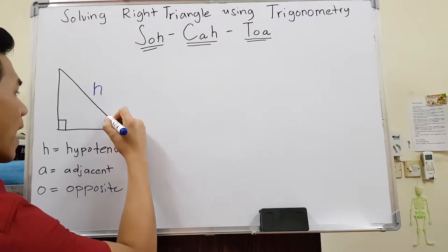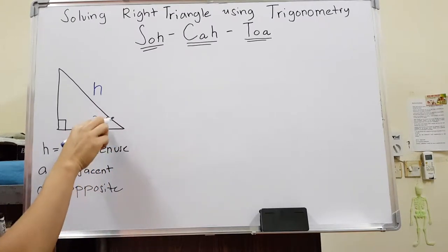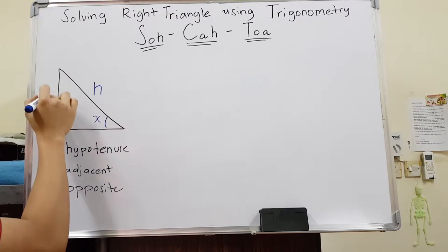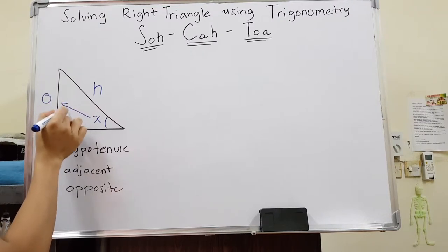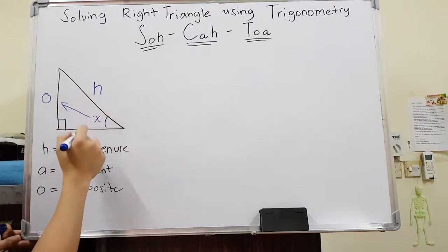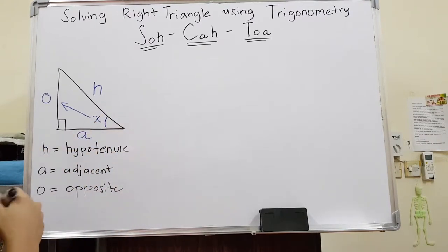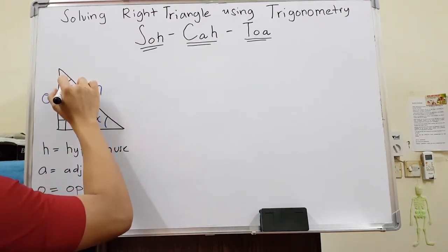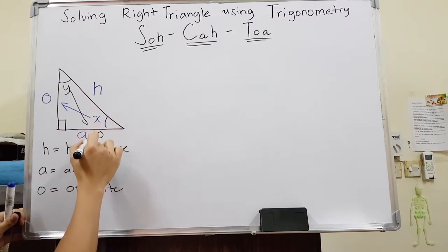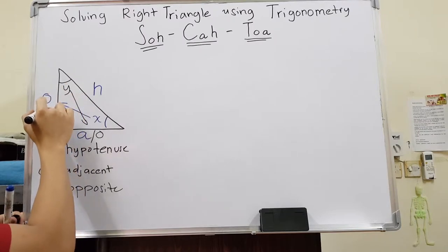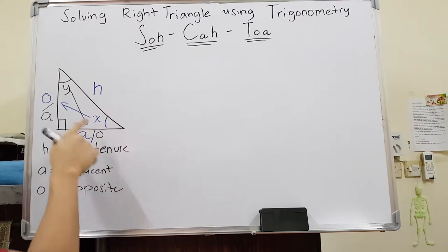Let's say angle X is here. The side opposite to angle X is the opposite side, and the remaining side is the adjacent — the side beside the angle. Now, if the angle is instead angle Y at a different vertex, then the opposite and adjacent sides switch accordingly. As you can see, the adjacent and opposite depend on where the angle is.